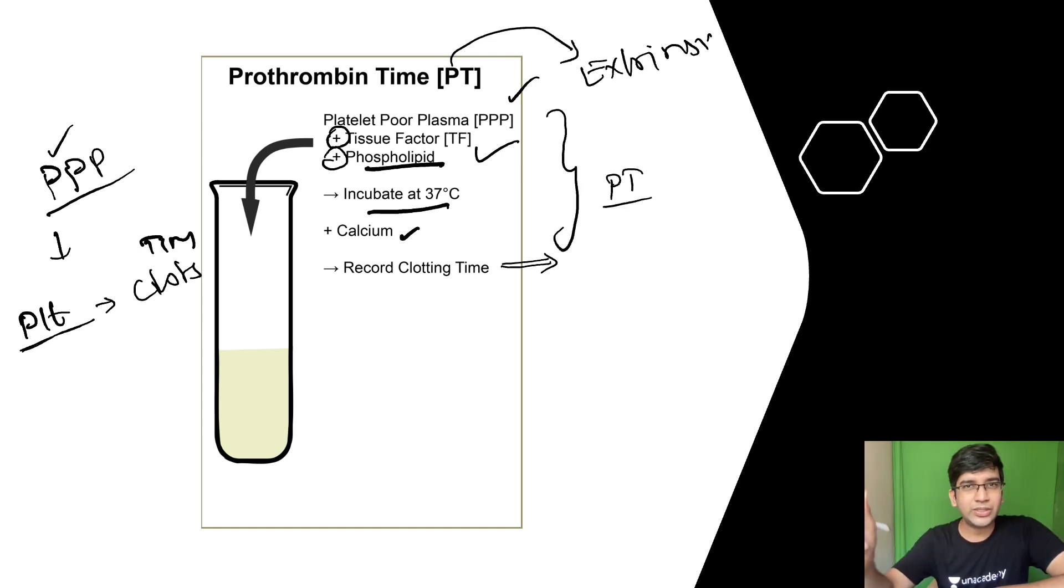The unique thing about prothrombin time is, it has lots and lots of variation because the factor which I add is not so standardized. In the same lab also, for every batch, I'll have a change because it keeps on changing. That's why we always report it as PT and INR. I'm sure in your internship, you must have asked for a PT-INR. International normalized ratio. I have to normalize it.